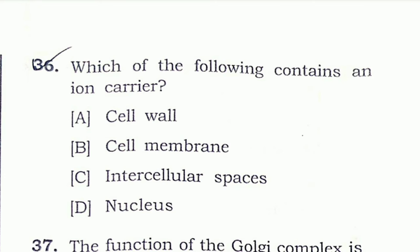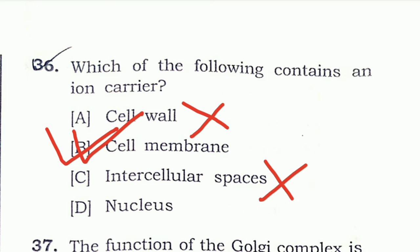Question 36: Which of the following contains an ion carrier? Cell wall? No — the cell wall does not contain any ion carrier because it is completely permeable. Cell membrane? Yes — the cell membrane contains ion carriers. Intercellular space? No. Nucleus? No. The right answer is option B — cell membrane.